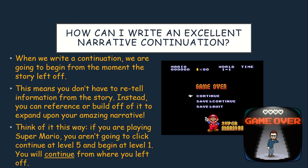You're probably wondering, how can I write an excellent narrative continuation? When we write a continuation, we're going to begin from the moment the story left off. This means you don't have to retell information from the story. Instead, you can reference it or build off of it to expand upon it in your amazing narrative. Think of it this way — if you're playing Super Mario and you're on level five, when you win, you expect to go to level six. In your story, we read the first chapter, and I'm expecting to read chapter two. You're continuing from where we left off.